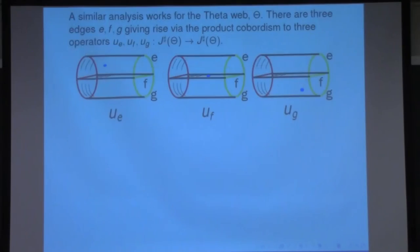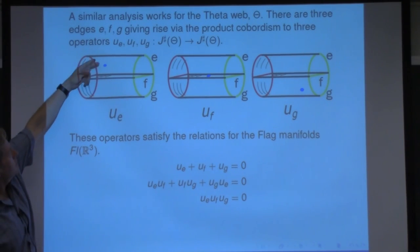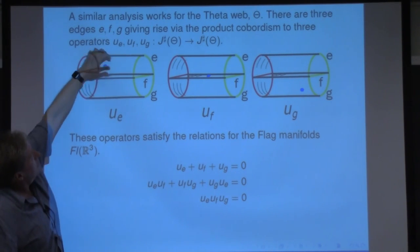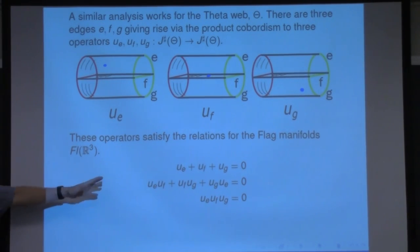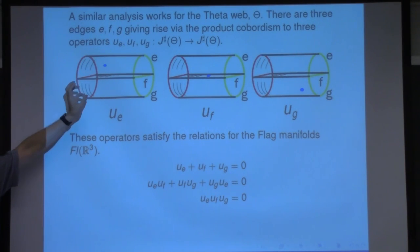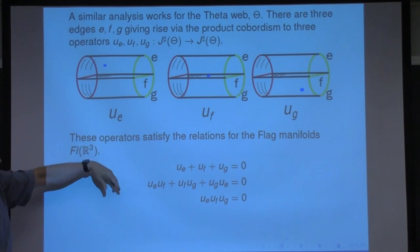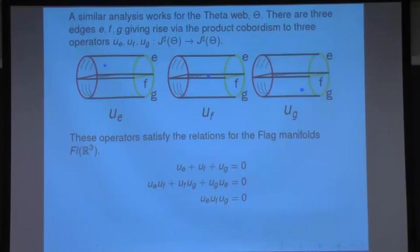You can play a similar game with the theta web. There are three interesting places to put a dot: on the top half (U_E), the middle plane (U_F), and the bottom (U_G). After checking, these satisfy the relations in the representation variety of the theta web, which is the full flag manifold of R3 — whose homology has rank six with Z2 coefficients. These operators satisfy those relations, so it looks like the homology of the flag manifold as a module over the cohomology.